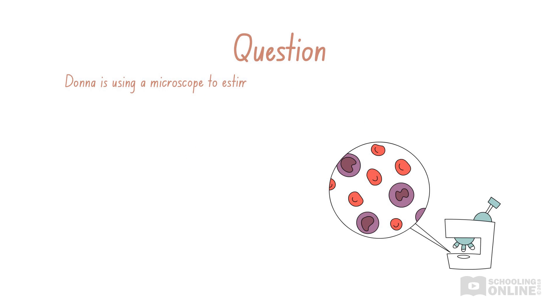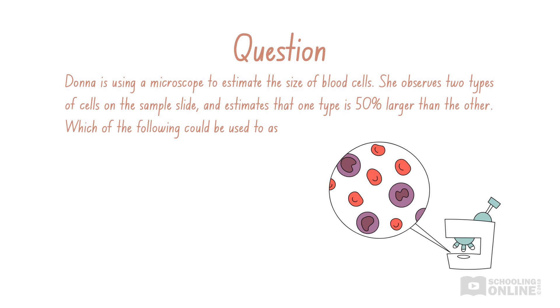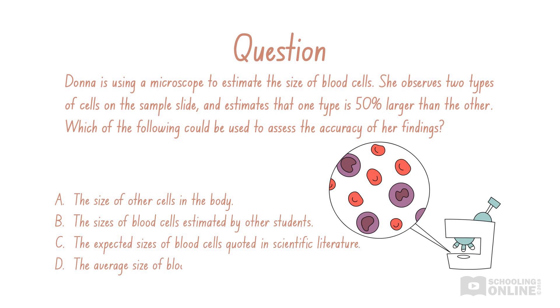Let's revise our understanding of this topic by looking at a sample question. Donna is using a microscope to estimate the size of blood cells. She observes two types of cells on the sample slide and estimates that one type is 50% larger than the other. Which of the following could be used to assess the accuracy of her findings? Pause the video to think about your answer.